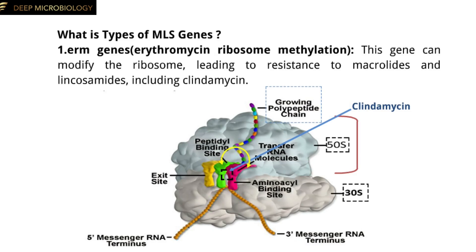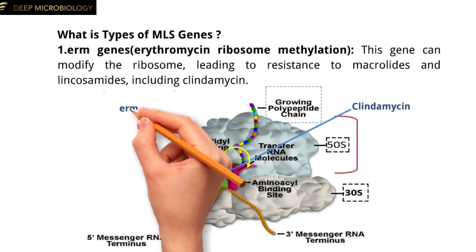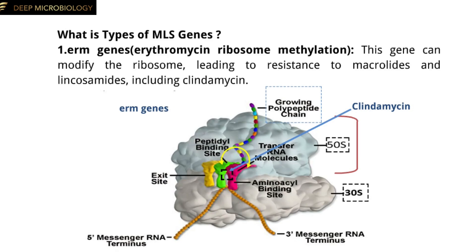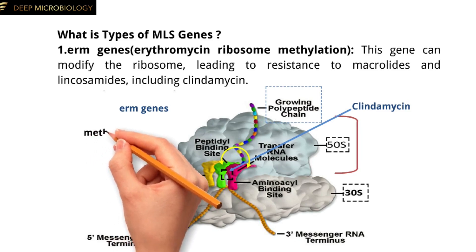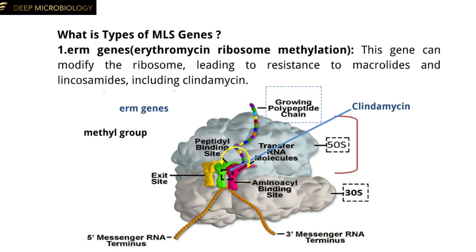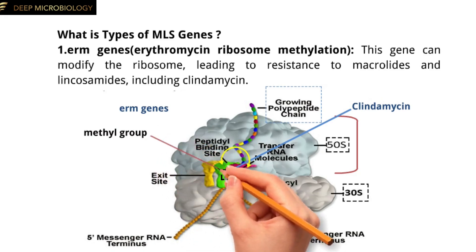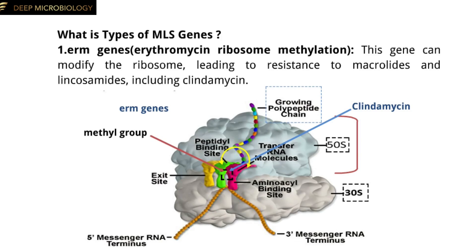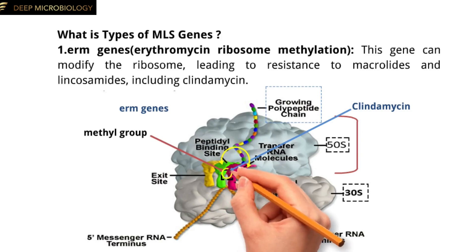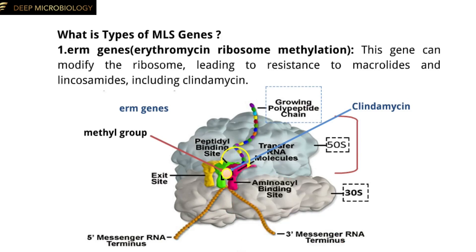This blockage prevents the continuation of peptide bond formation, effectively preventing bacterial growth. In bacteria that possess ERM, erythromycin ribosome methylation genes, these genes encode methyltransferases that modify the ribosomal RNA in the 50S subunit. This modification involves the addition of a methyl group to adenine residues in the 23S ribosomal RNA, which alters the structure of the peptidotransferase center. As a result, the binding site for antibiotics like clindamycin is changed, leading to antibiotic resistance.